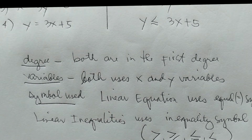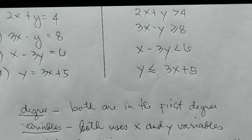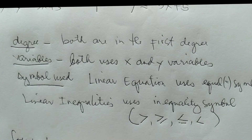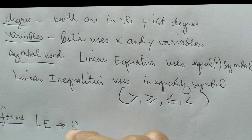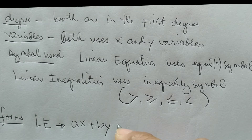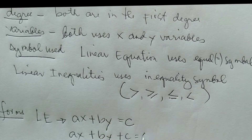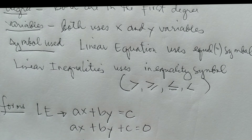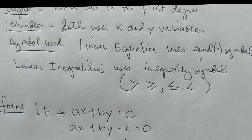In terms of forms, linear equations in two variables take the form Ax plus By is equal to C. Sometimes it is also written as Ax plus By plus C is equal to 0. And sometimes it is written in the slope-intercept form: y equals Mx plus B. Those are the forms of linear equations.